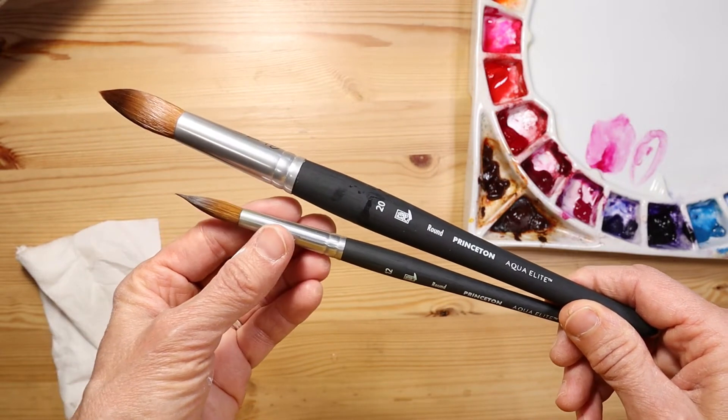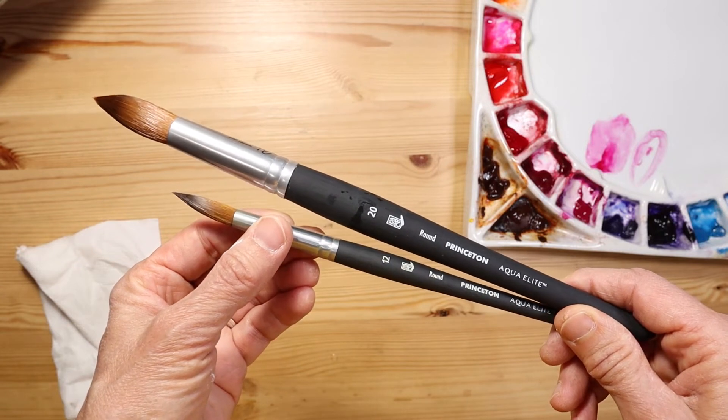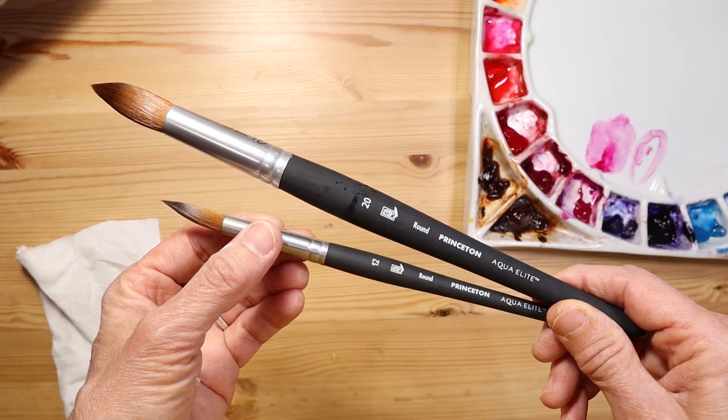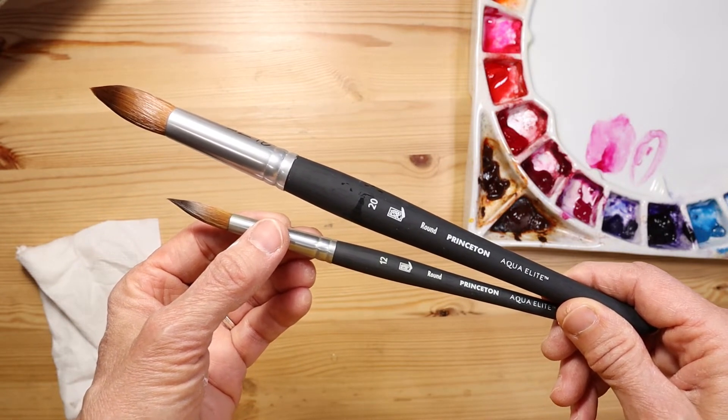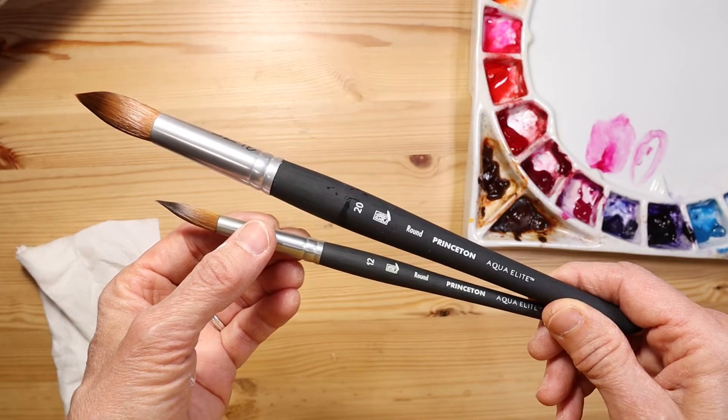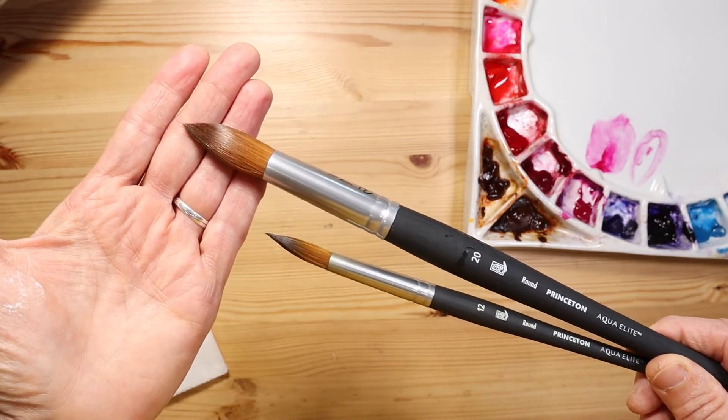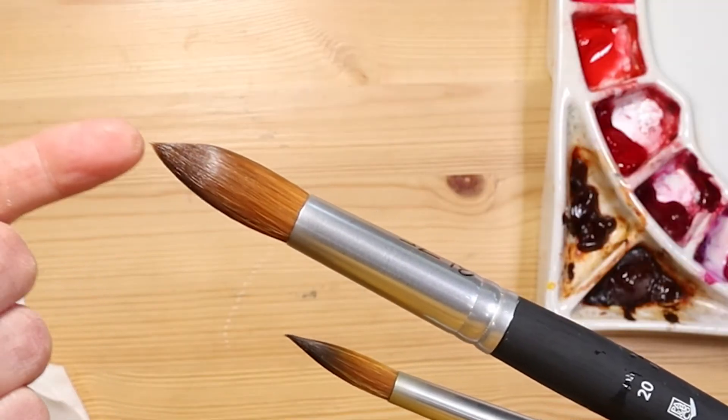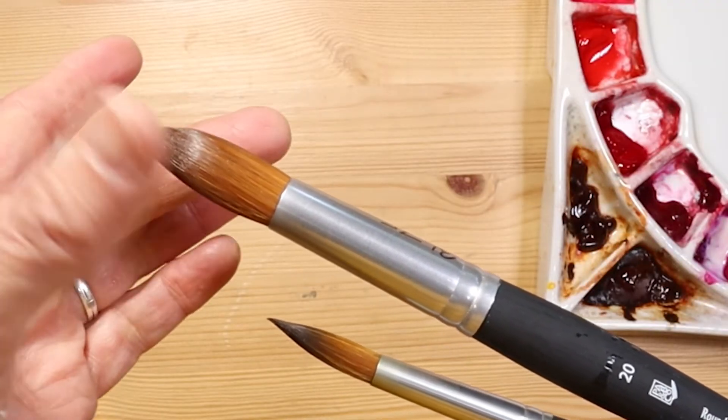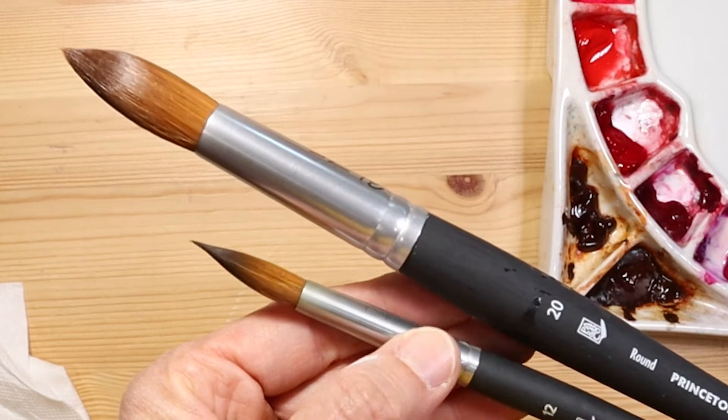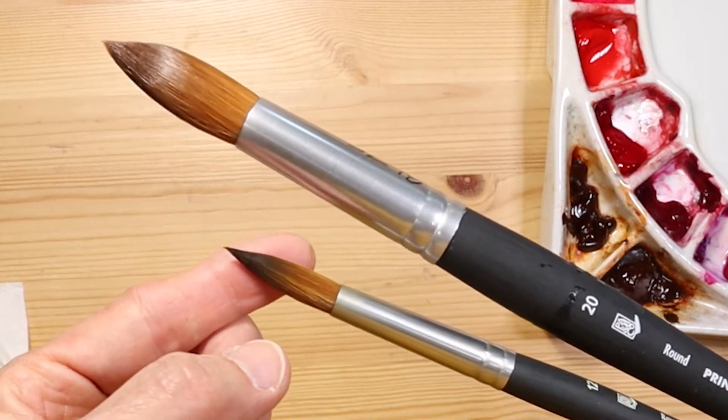It is made to mimic a Kolinsky sable, however it is completely synthetic. They call it their next-gen synthetic fibers, which mimic the Kolinsky sable brushes. They have a very fine point, as you can see here. They hold a lot of water, and they have a little bit of stiffness to them.